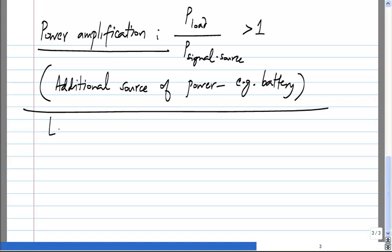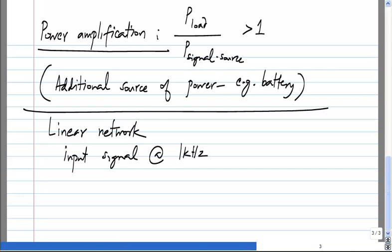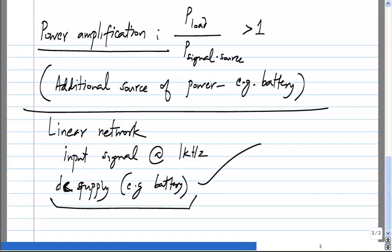If you have a purely linear network and you consider an input signal at, say, 1 kHz, and a DC supply — however you arrange the linear network, the power drawn from the DC supply cannot contribute to power in the 1 kHz signal.